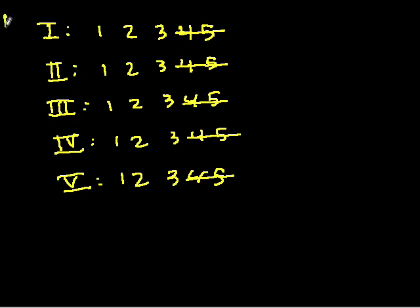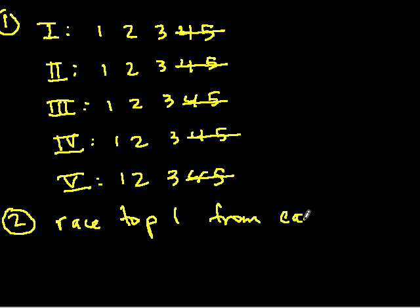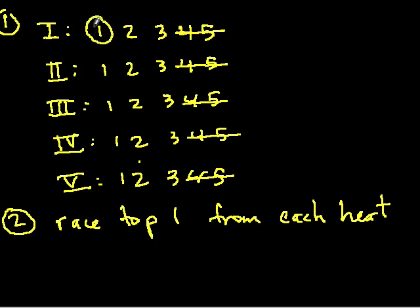Step two is to race the top finisher from each heat — all five of those horses — against each other. This determines the relative ranking among the group winners. Suppose I've labeled it such that group one has the fastest overall horse. That horse is the fastest of all 25. The slowest of these top finishers is ranked 5th among winners. If a horse finished 4th among the winners, we don't care about any horses from that group. Similarly, the 5th place winner's entire group is eliminated.